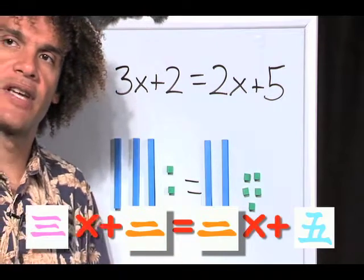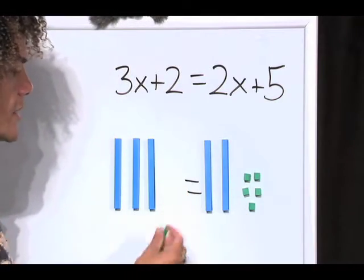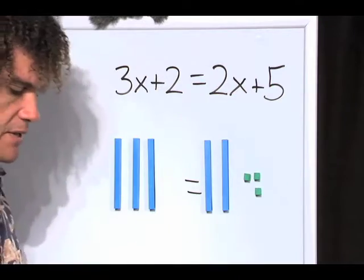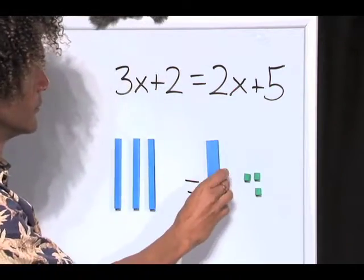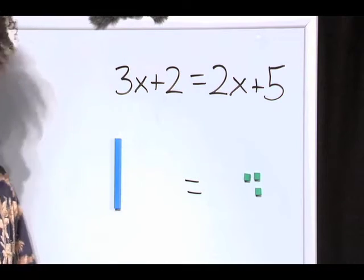So let's remove the stuff that's the same, so we can discover what x is. So here, I take two from here, and two from here. We remove the same stuff. Two from here, and two from here. Ah, x is the same as three.